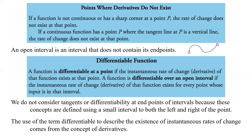A function is differentiable at a point p if the instantaneous rate of change — the derivative — of that function exists at that point. A function is differentiable over an open interval only if the instantaneous rate of change exists for every point whose input is in the interval. You need a tangent line at each point throughout the interval, excluding endpoints. We don't consider differentiability at endpoints because you can't approach from both sides. The term 'differentiable' describing the existence of the instantaneous rate of change comes from the concept of derivatives — derivatives and differentiability go hand in hand.